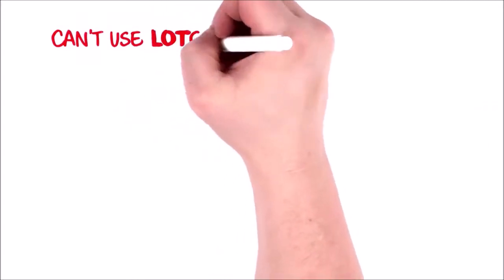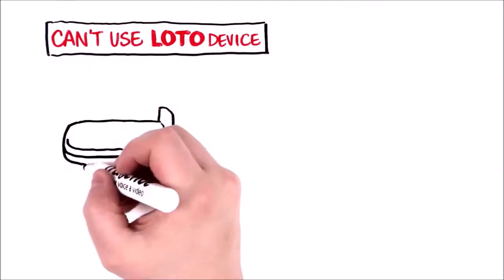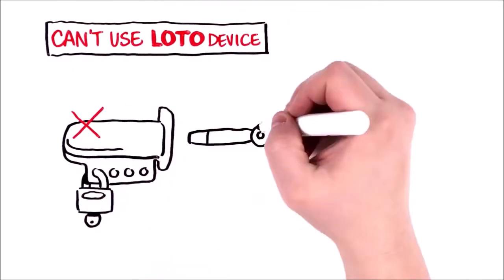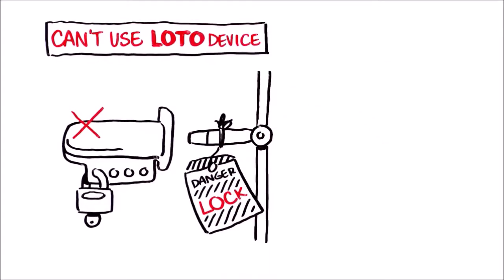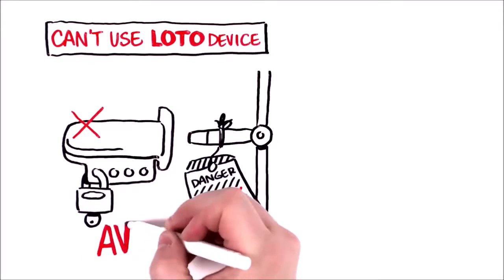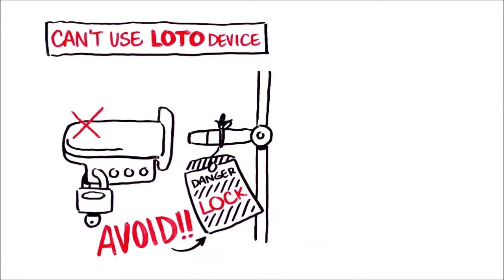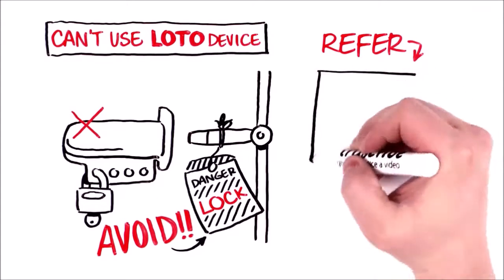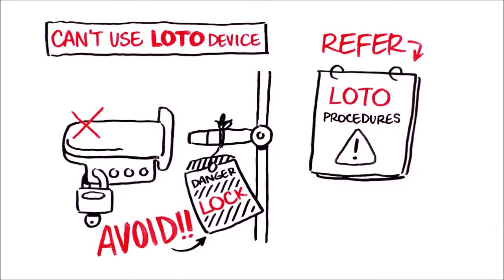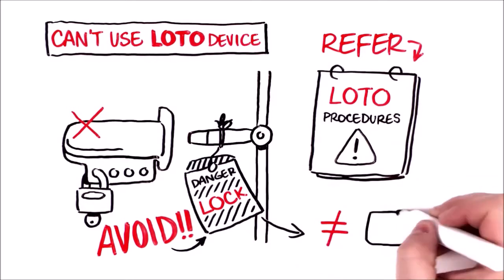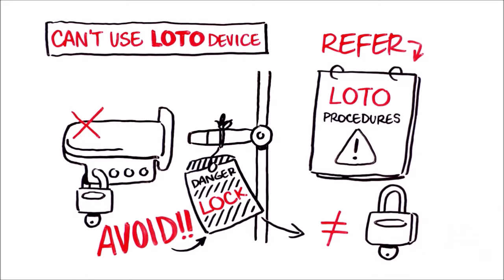What should you do if you can't use a lockout device during your service activity? Can you use just a tag to notify people not to reactivate an energy source? Only if that is the sole option. In other words, this scenario should be avoided as much as possible. If it is the only option, refer to your site's LOTO procedure and take special safety precautions. Remember, tags don't provide a physical barrier against reactivation, which severely limits their effectiveness.